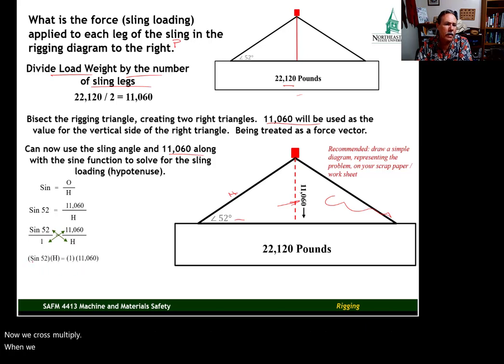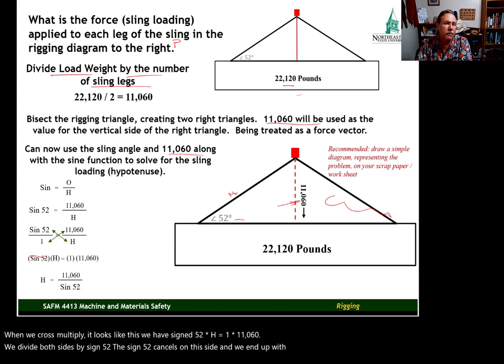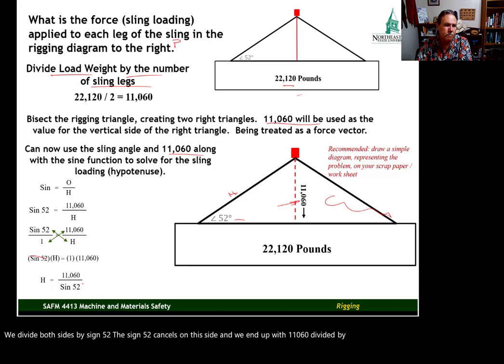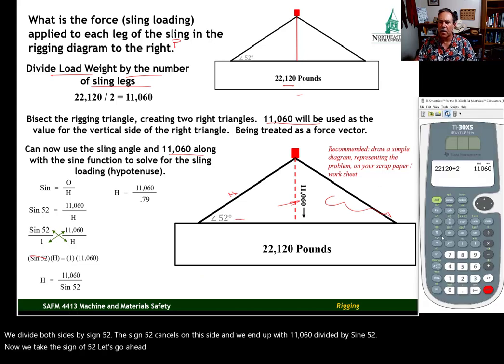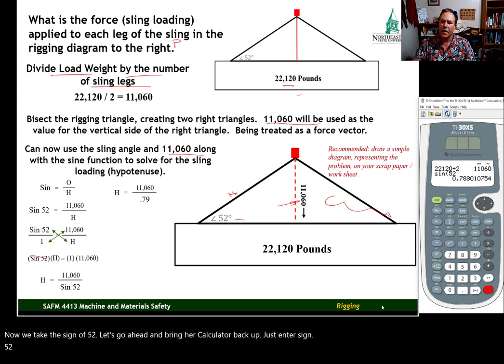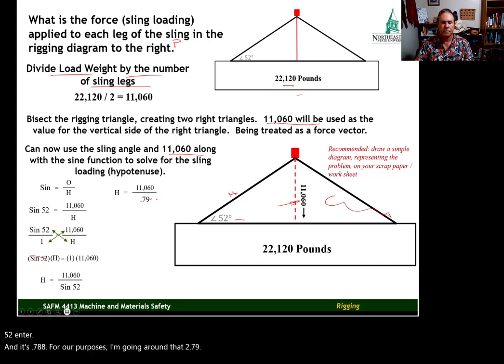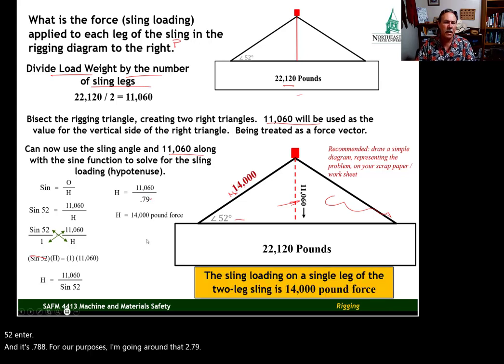When we cross multiply, it looks like this. We have sine 52 times h equals 1 times 11,060. We divide both sides by sine 52. The sine 52 cancels on this side, and we end up with 11,060 divided by sine 52. Now we take the sine of 52. Let's go ahead and bring our calculator back up. Just enter sine 52, enter, and it's 0.788. For our purposes, I'm going to round that to 0.79.